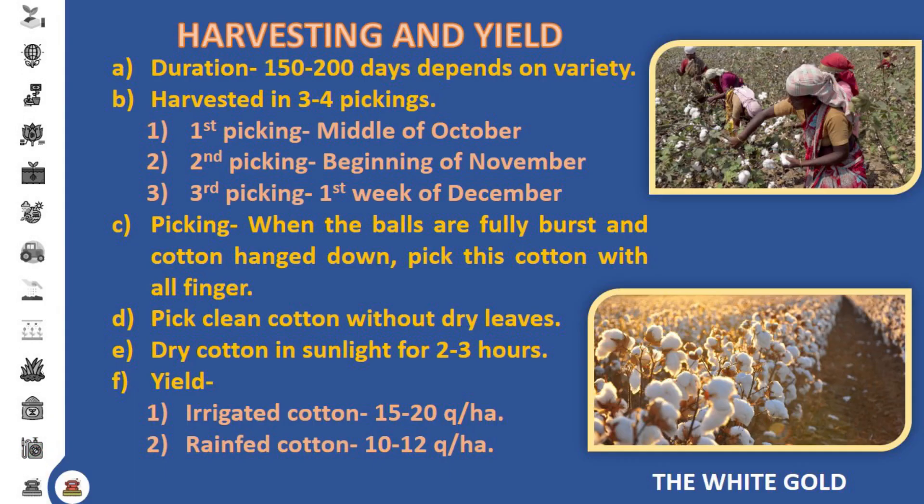In case of harvesting and yield, the duration of cotton crop is 150 to 200 days, depending on the variety. Cotton is harvested in three to four pickings. First picking is carried out in the middle of October, second at the beginning of November, and third in the first week of December. When the bolls are fully burst and cotton hangs down, pick the cotton with all fingers. Pick clean cotton without dry leaves. Dry the cotton in sunlight for two to three hours. The yield of irrigated cotton is 15 to 20 quintals per hectare, and rain-fed cotton is 10 to 12 quintals per hectare.